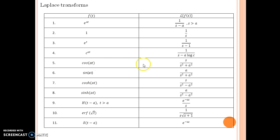Cosine at is given by s upon s squared plus a squared, and these are the remaining formulas. Some of them we have already derived initially or at the later stage, and then we have already seen them.